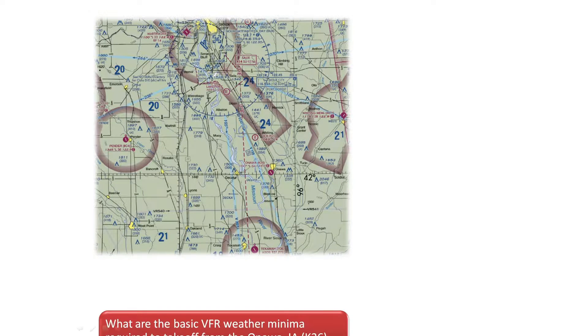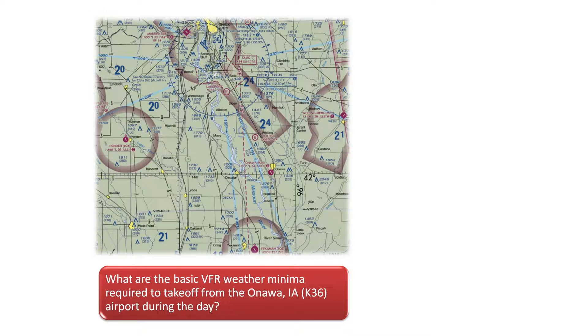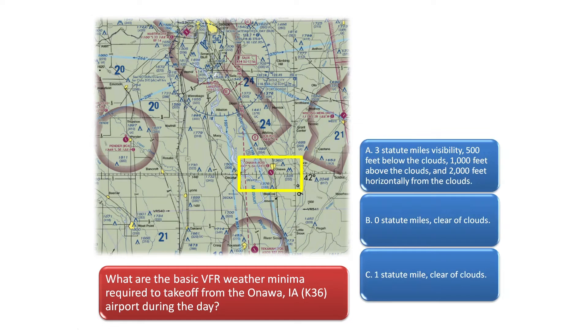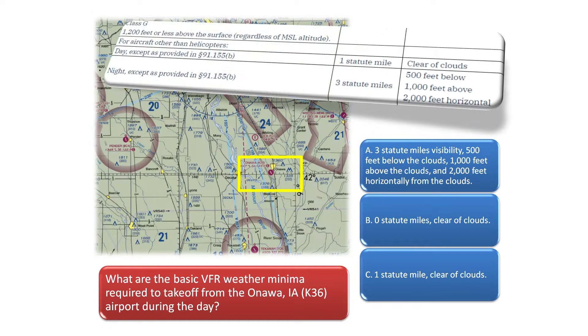What are the basic VFR weather minimums required to take off from the Onawa, Iowa, K36 airport during the day? Notice the Onawa airport highlighted by the yellow box in the chart. The airport is an uncontrolled airfield in Class G airspace. The required VFR weather minimums for daytime flight in Class G airspace is one statute mile and clear of clouds, according to the Aeronautical Information Manual. The correct answer is C.